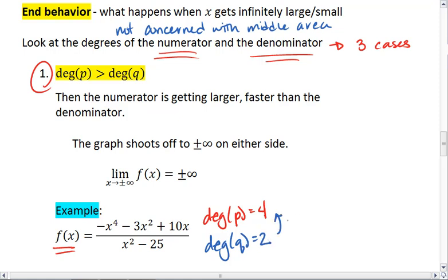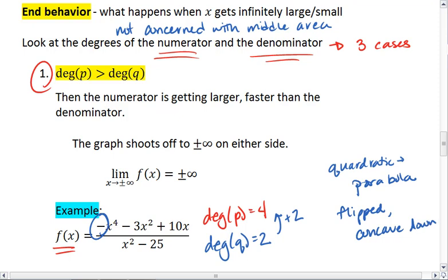The degree of the numerator is 2 more than the denominator, meaning if we zoom out on our graph, it's going to look like a quadratic - a parabola. Don't forget the negative out front, which means it will be flipped, so it's concave down.